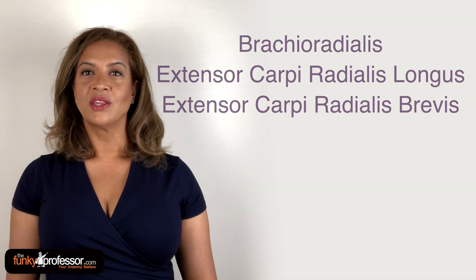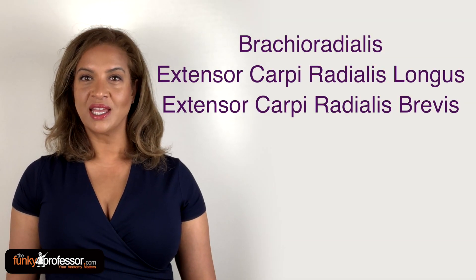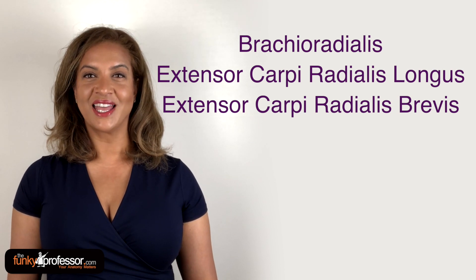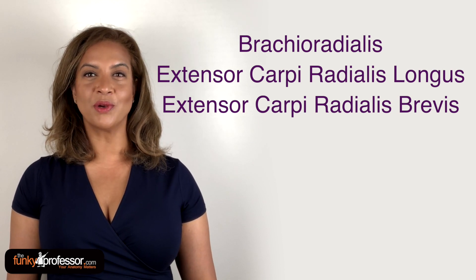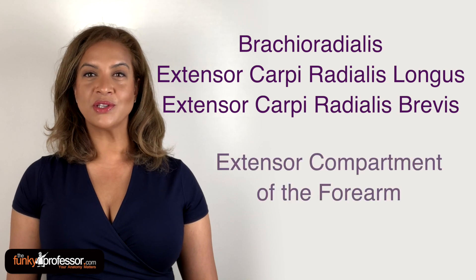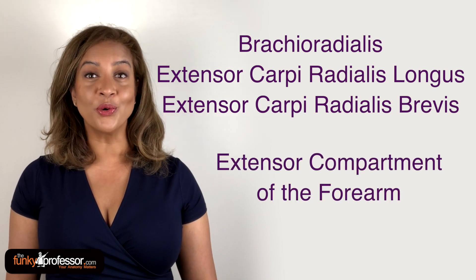Question 4 was which muscles make up the mobile wad of three and where are they found? The answer was brachioradialis, extensor carpi radialis longus, extensor carpi radialis brevis, and they're found in the extensor compartment of the forearm.